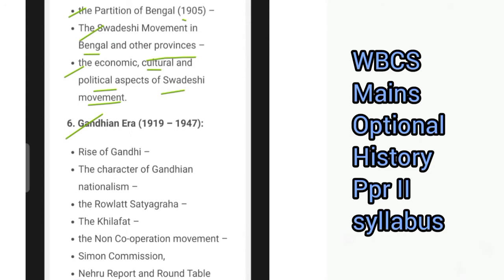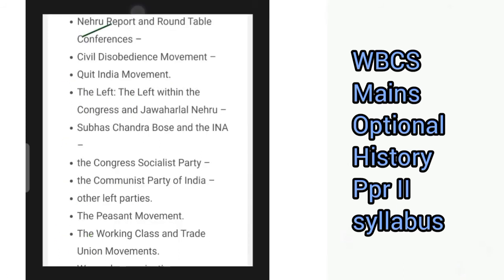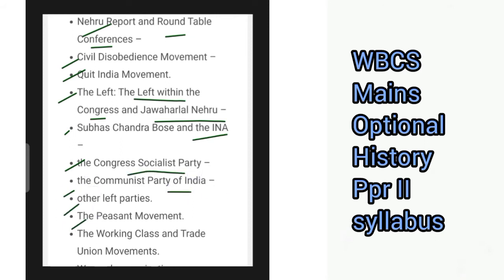Then comes the Gandhian era, where you can expect questions based on the rise of Gandhi, the character of Gandhian nationalism, the role of Satyagraha, the Khilafat movement, the non-cooperation movement, the Simon Commission, the Nehru report and round table conferences, civil disobedience movement, quit India movement, the left within the Congress and Jawaharlal Nehru, Subhash Chandra Bose and the INA, the Congress Socialist Party, the Communist Party of India, other left parties, the peasant movement, the working class and the trade union movements.